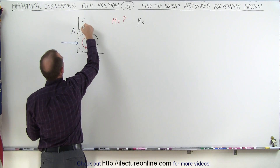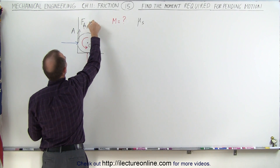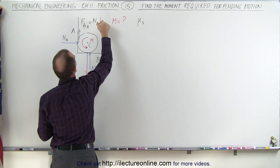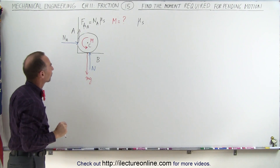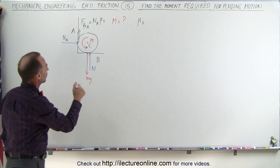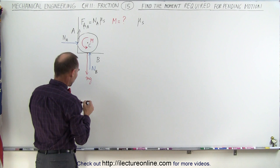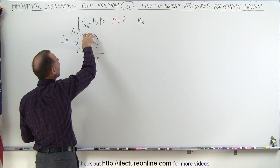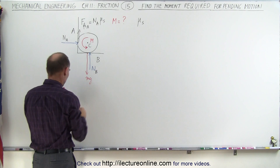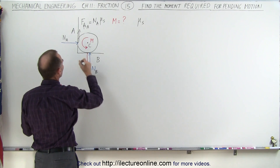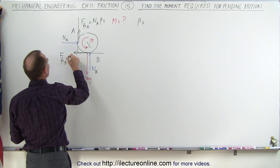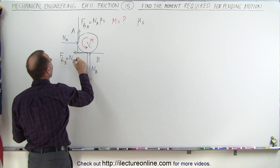This is friction force at A, and that is going to be equal to N sub A — the normal force at A — times the coefficient of static friction, mu sub s. Here we'll call that N sub B, and therefore we're going to have a friction force in this direction. By turning the cylinder this way, you find friction in the opposite direction, so the friction force at B equals the normal force at B times mu sub s.